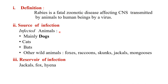Sources of infection are infected animals like dogs, cats, bats and other wild animals — fox, raccoons, skunks, jackals and mongoose. The reservoir of infection of rabies includes jackals, fox and hyena. They are just the reservoir — they carry the virus but show no symptoms of rabies.